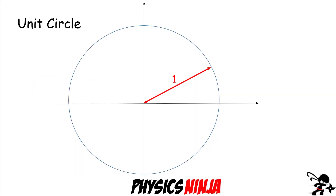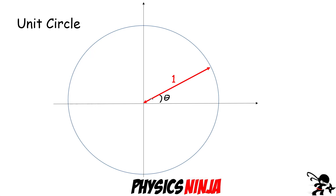The first thing I do to begin this proof is we start with a unit circle. A unit circle has a radius of one. I define an angle theta with respect to the x-axis, and I label the opposite and adjacent lengths to this angle. If the radius is one, the opposite is sine of theta and the adjacent to the angle theta is cosine of theta. This is where we start off.